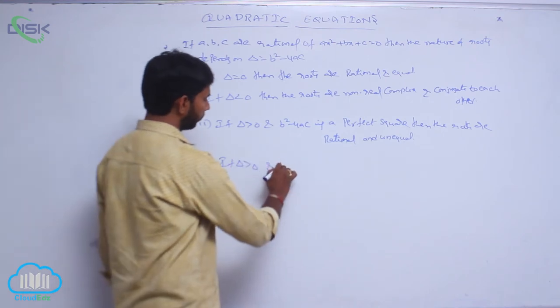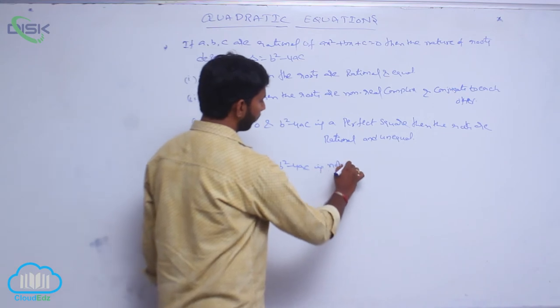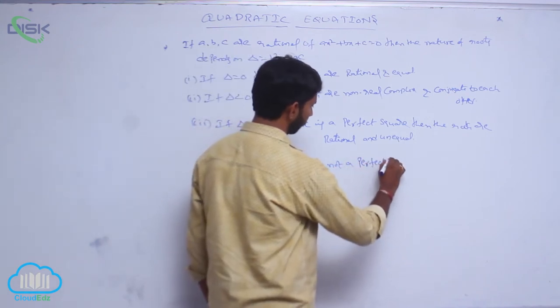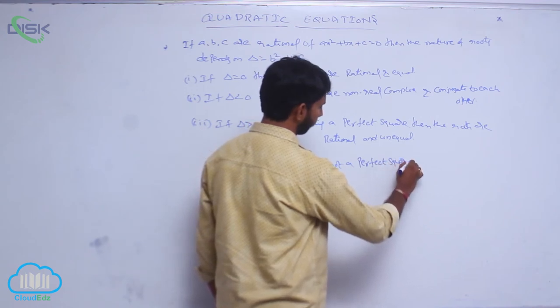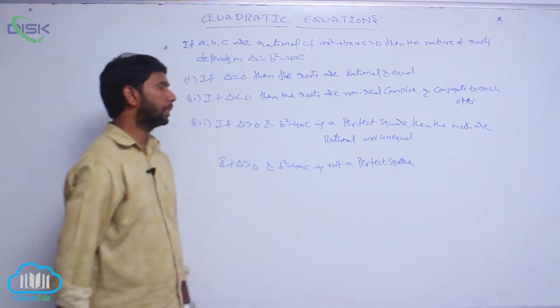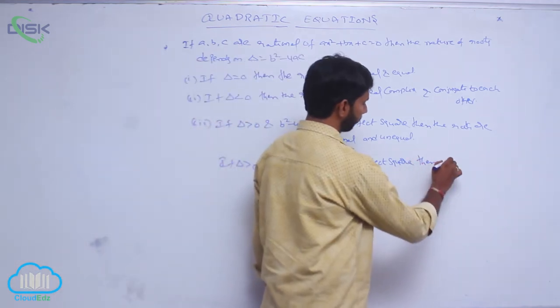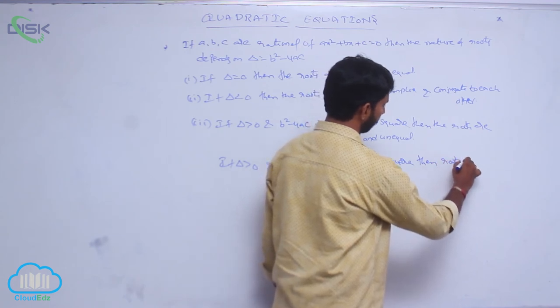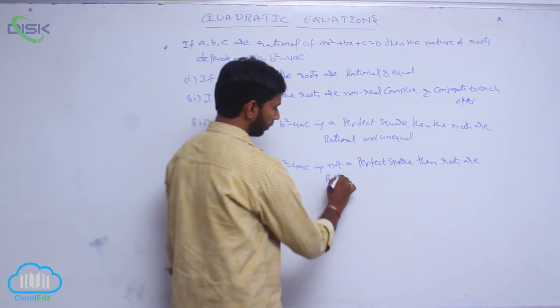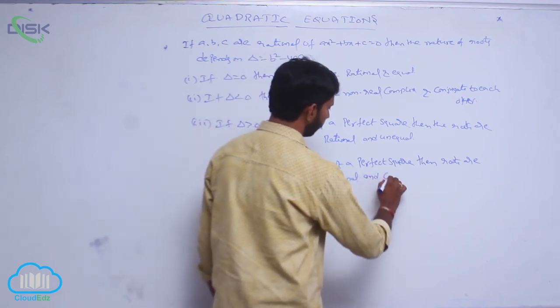If delta is greater than 0 and B² - 4AC is not a perfect square, then the roots are irrational and conjugate to each other.